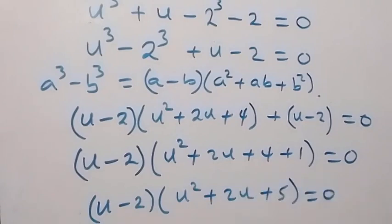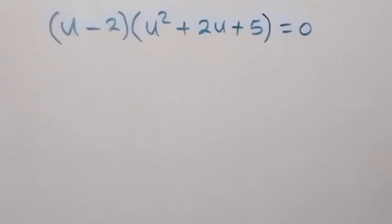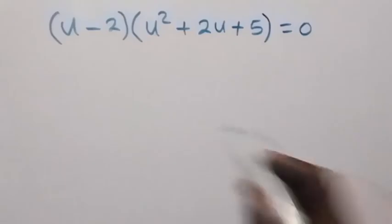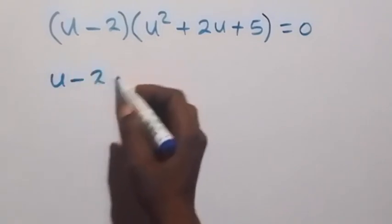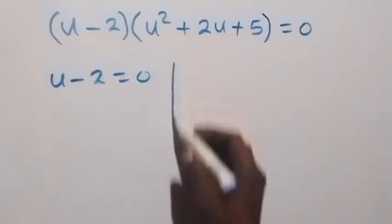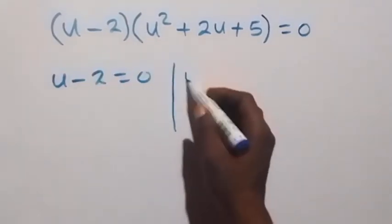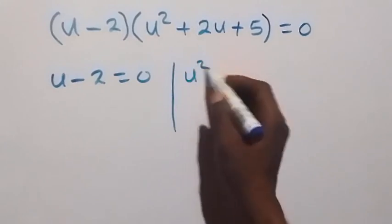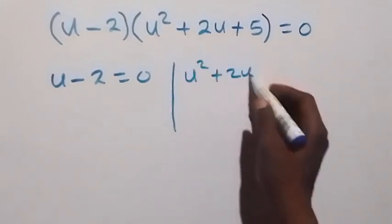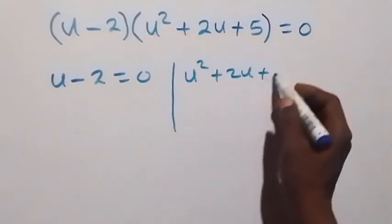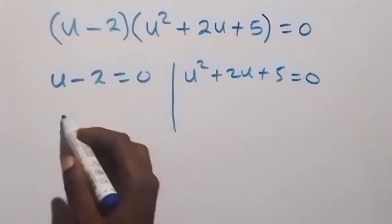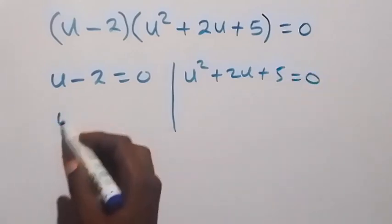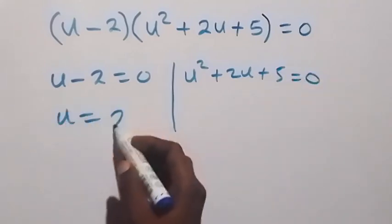From here, we have two possible cases. On this side, we have u minus 2 equals to 0, or we have u squared plus 2u plus 5 equals to 0. From the first case, we have u equals to 2.